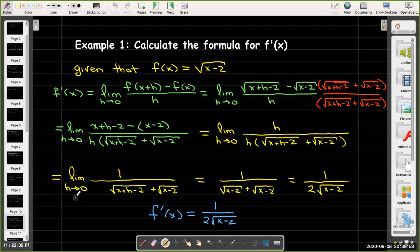And now I can use direct substitution. I can just replace h with 0 and clean that up a little bit, because I actually have radical x minus 2 plus another radical x minus 2. So I get 1 over 2 times radical x minus 2. So f prime of x equals 1 over 2 radical x minus 2. So notice that when we're calculating the derivative as a function, the answer is going to be a new formula. It's not going to be a single number.